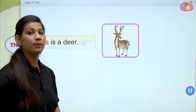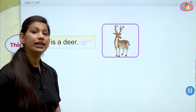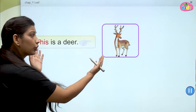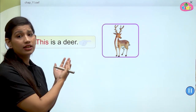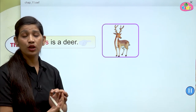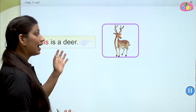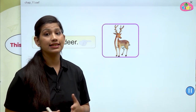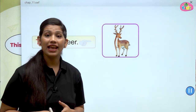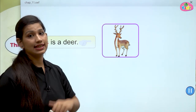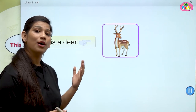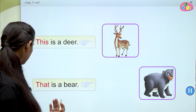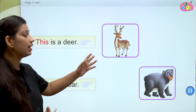Here students, you can see a picture of deer. The deer is close — deer toh paas mein hai. So what we will say? This is a deer or that is a deer? Yes, we will say this is a deer, kyunki deer toh paas mein hai. Deer paas mein hai, so we will say this.